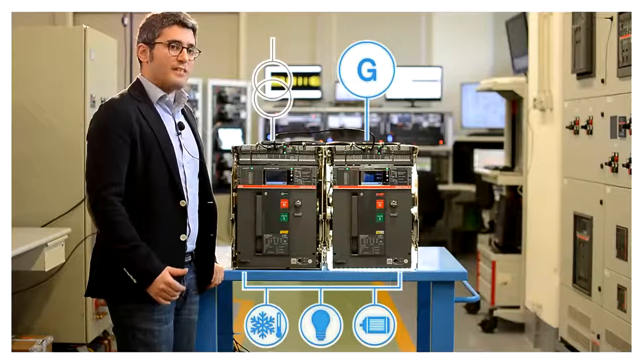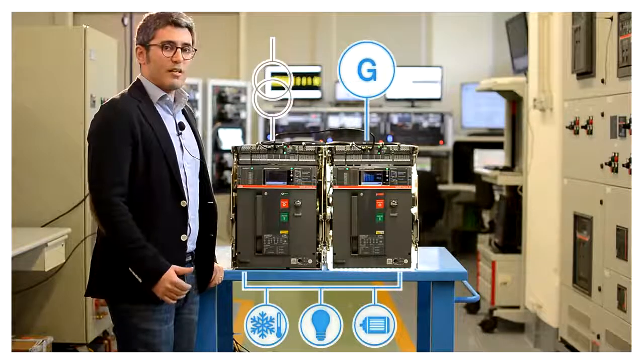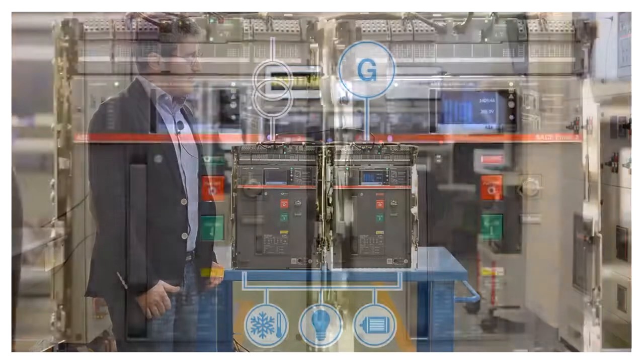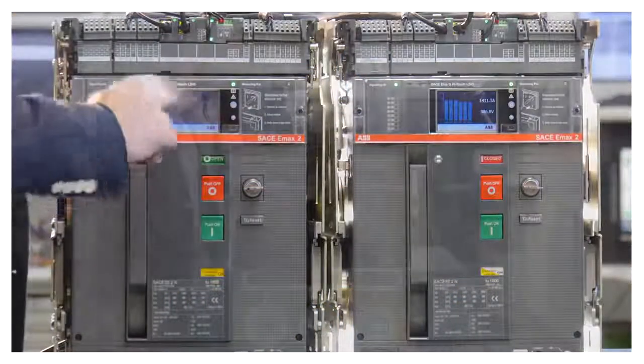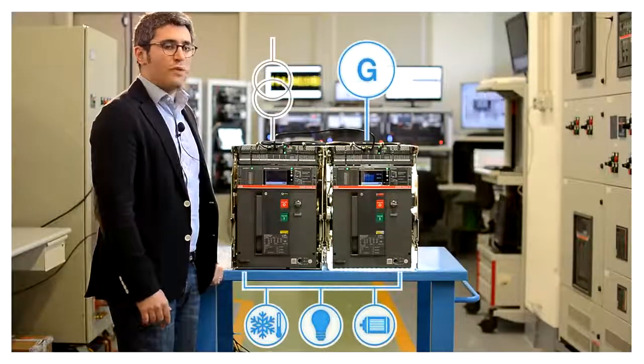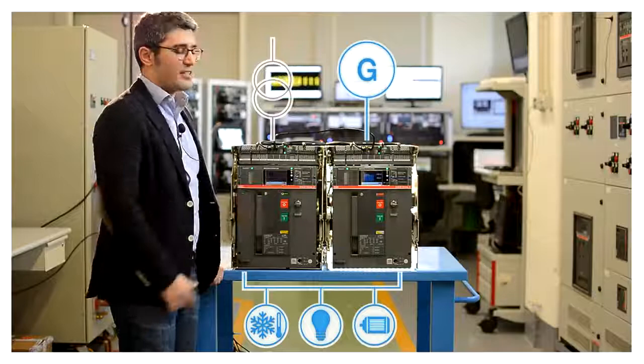As soon as the circuit breaker of the main line detects the grid is ok, the two trip units for the emergency and the main line share some information in order to detect if the two lines are synchronized.